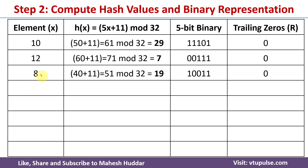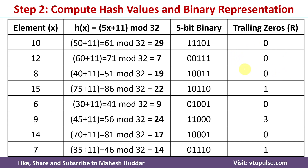Next, consider element 8 — for this one we are also getting trailing zeros of 0. Next, consider element 15: 15 × 5 = 75; 75 + 11 = 86; 86 mod 32 = 22. The binary representation of 22 is 10110. Here we have 1 trailing zero, so the number of trailing zeros for element 15 is 1.